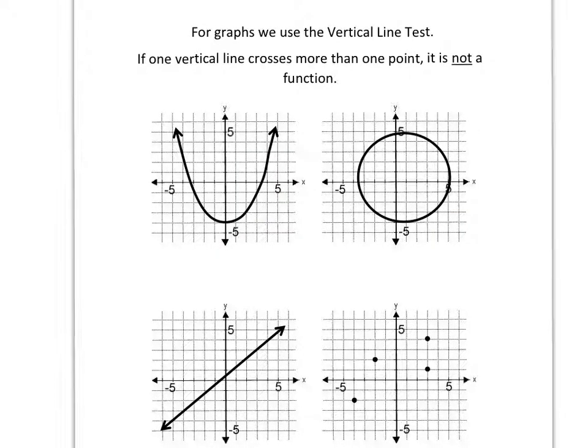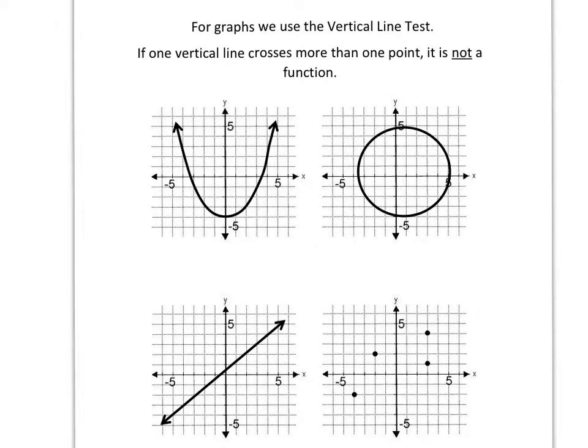For graphs, we're going to use what's called the vertical line test. If one vertical line crosses more than one place, for example over here in this circle, I can draw a vertical line right here and it crosses my graph at these two points.